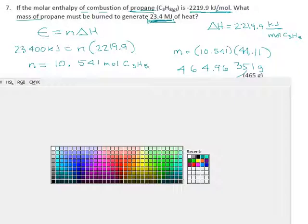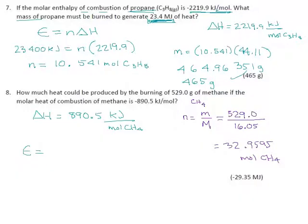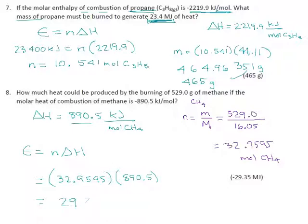So the formula E equals N times delta H has been sitting here waiting for us to get our number of moles done. Now we can carry on. Number of moles: just found it, 32.9595. Delta H given in the problem: 890.5. Multiplying those together gives 29,350.4, and it's energy, so it comes out in kilojoules.